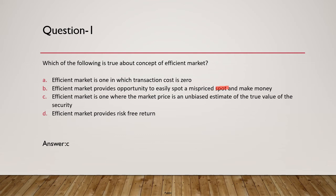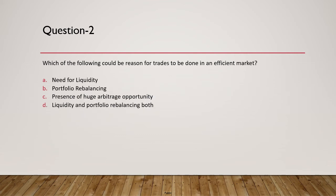Question 2: Which of the following would be a reason for trades to be done in an efficient market? If markets are efficiently pricing everything, why would transactions still occur? The options are: need for liquidity, portfolio rebalancing, presence of huge arbitrage opportunity, or both liquidity and portfolio rebalancing. Liquidity needs and portfolio rebalancing — such as when an index composition changes — are both valid reasons. The answer is D.